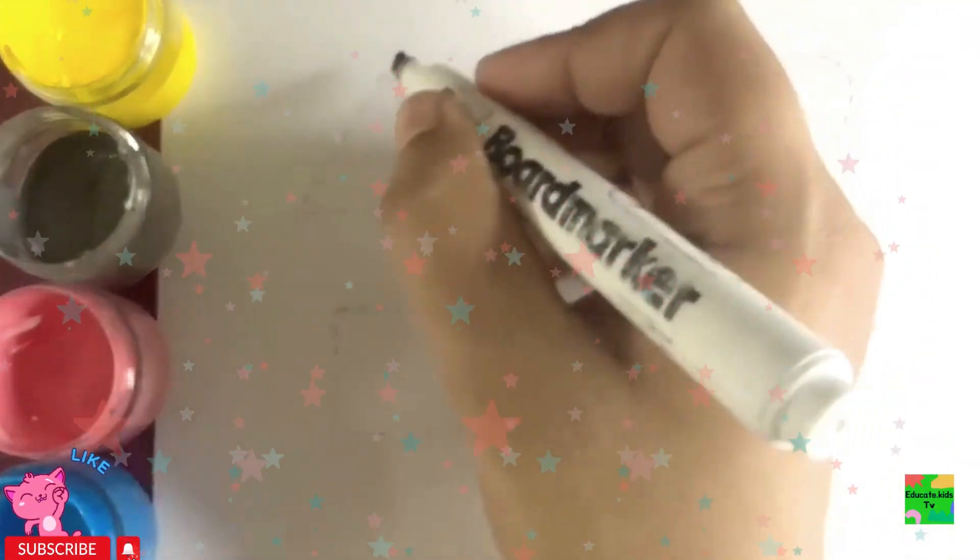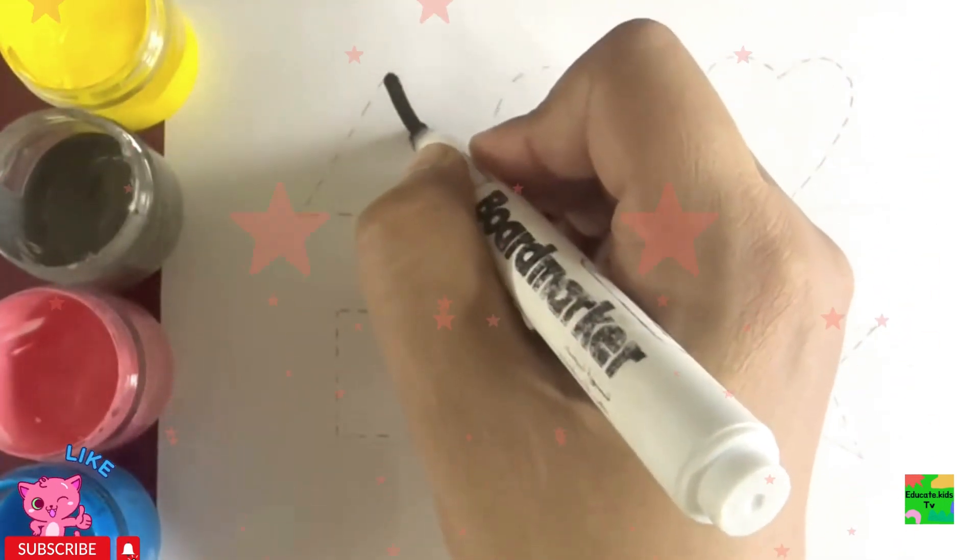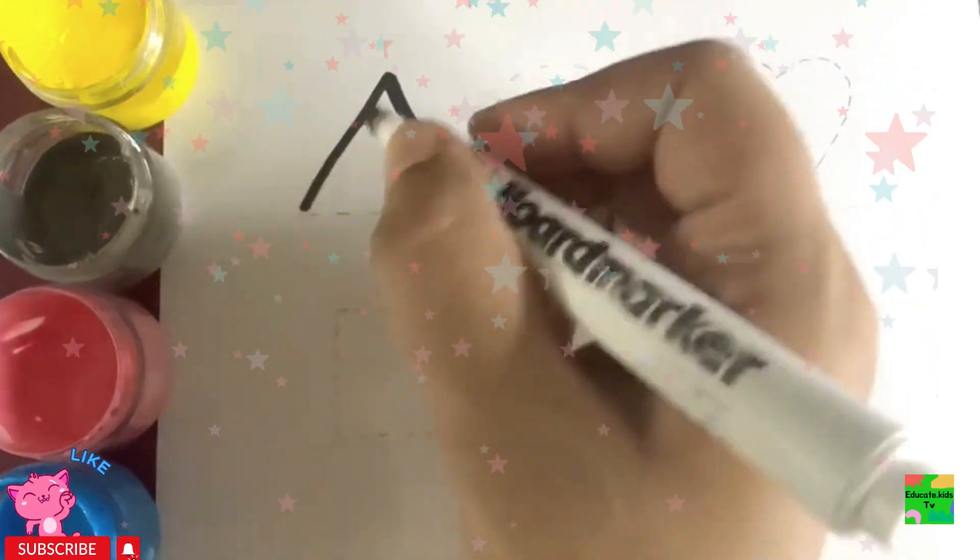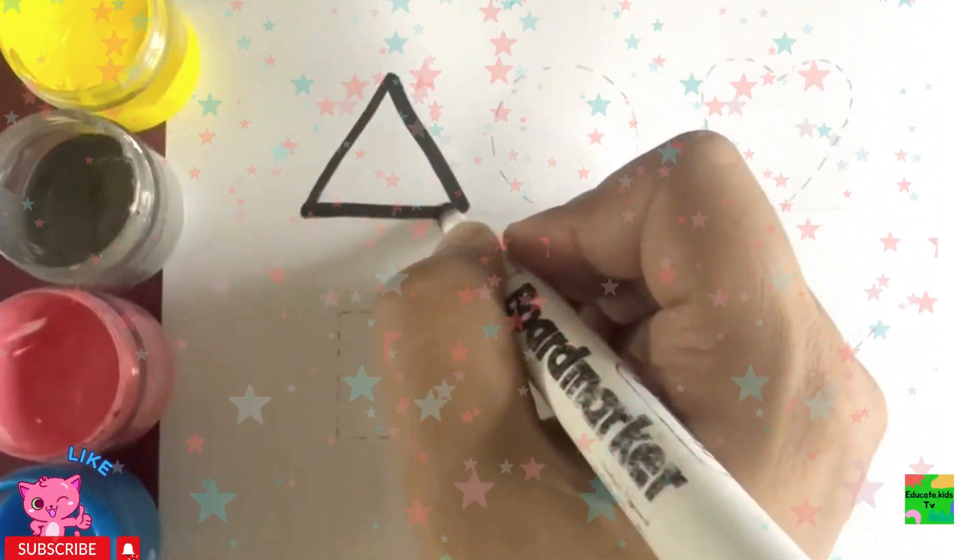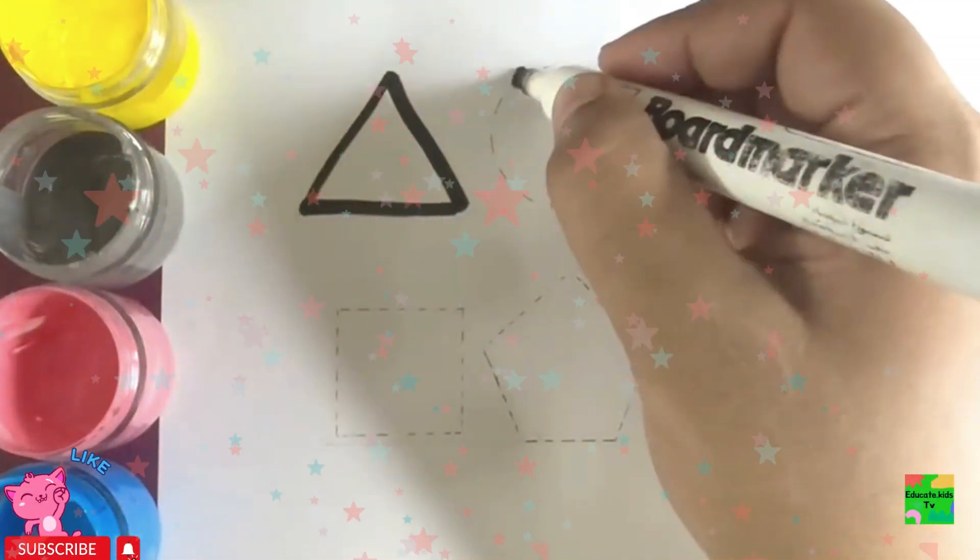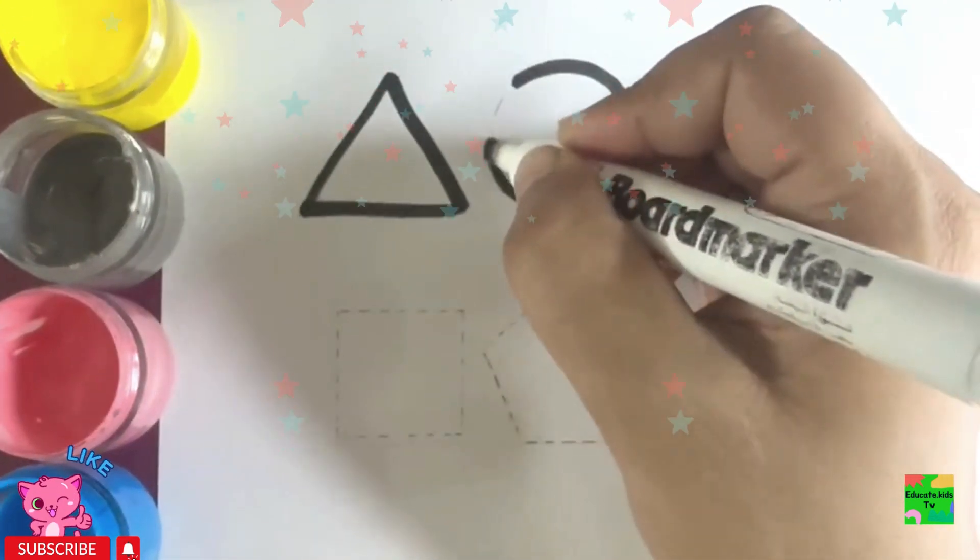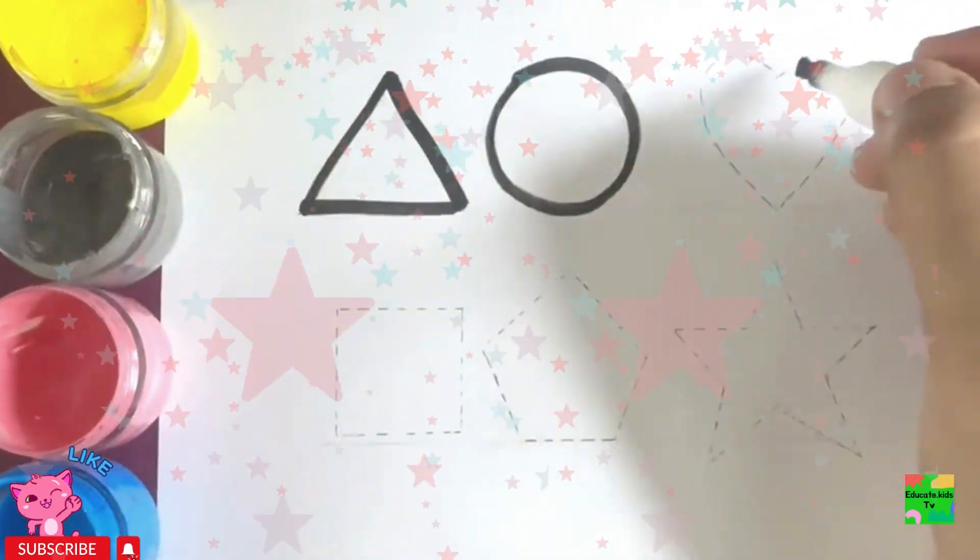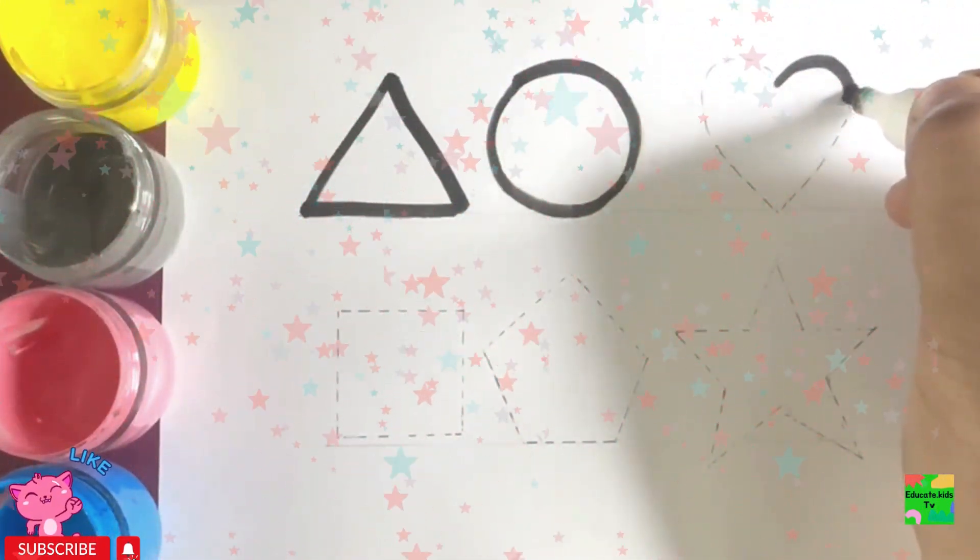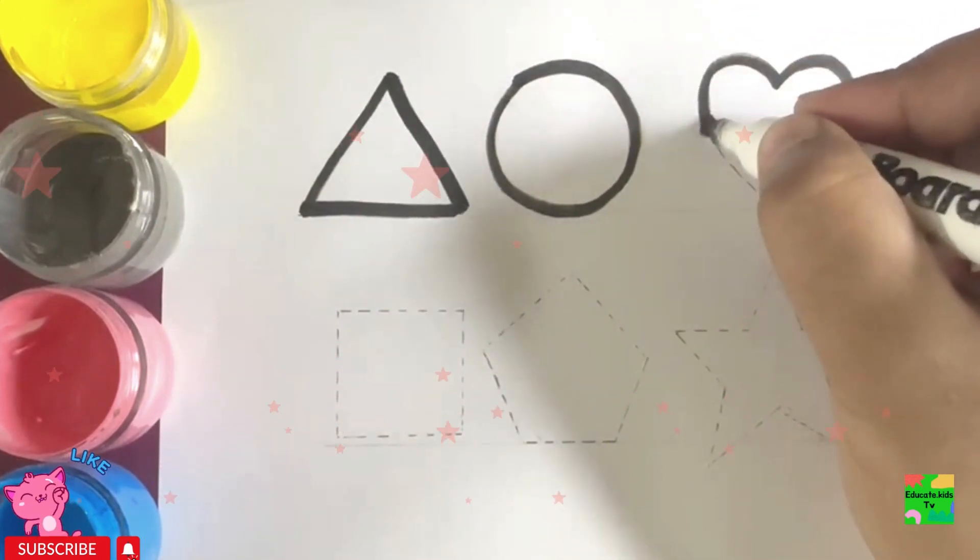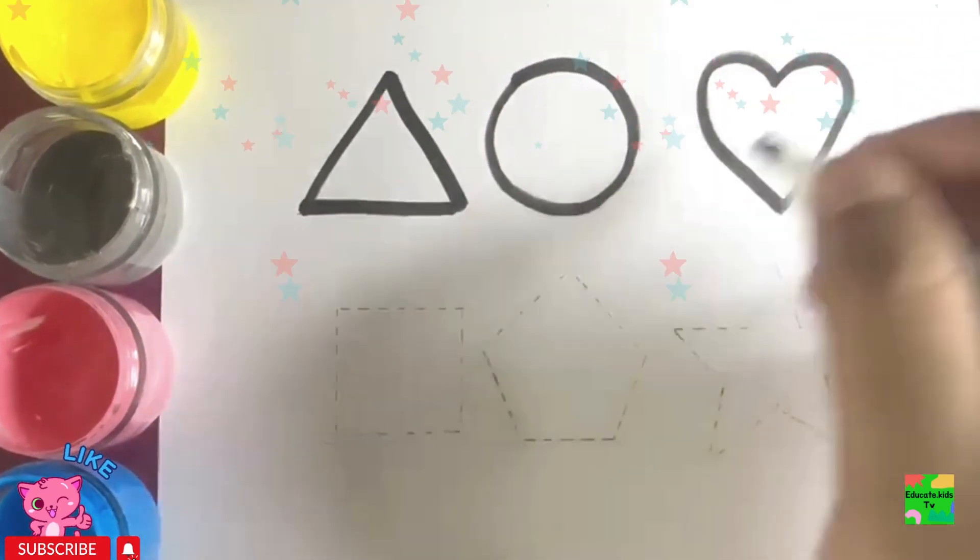Now, let's draw them. Triangle, circle, heart. All of these are 2D shapes.